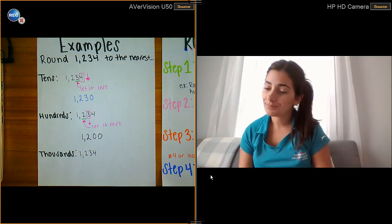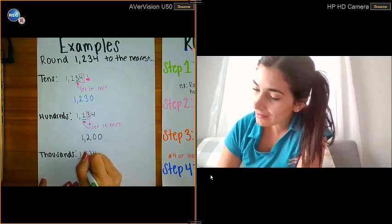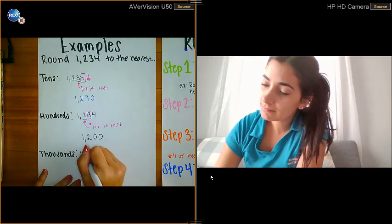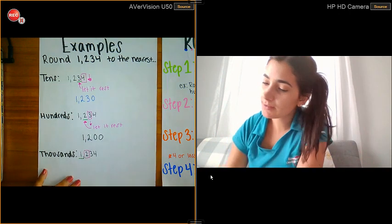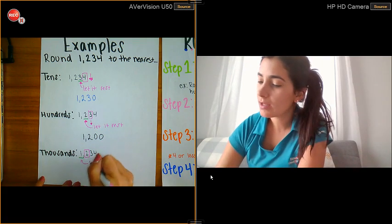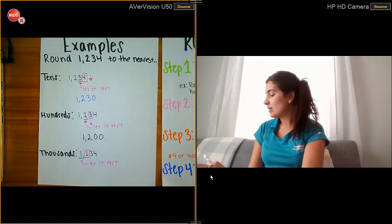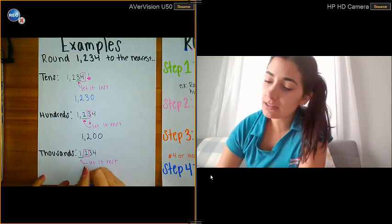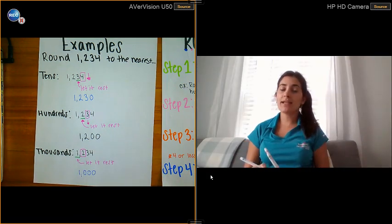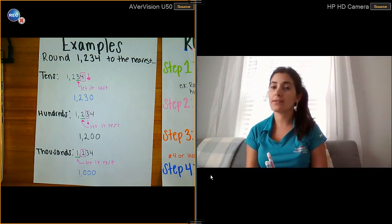Now rounding to the nearest thousands place: underline the thousands place. Box the number to its right, which is 2. Is 2 four or less? Yes — let it rest. So the 1 stays the same and everything else turns into zeros, giving us 1,000. That makes sense because 1,234 is closer to 1,000 than to 2,000.